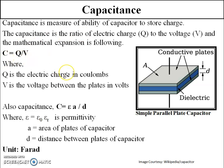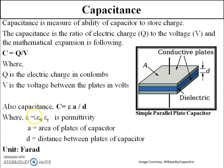Now suppose we have a capacitor with two conductive plates of area A and the plates are separated by distance d. This distance d covers the dielectric medium, shown in blue. Mathematically, the capacitance equation comes to be C = εA/d, where ε is permittivity, which is a combination of ε₀ and εᵣ. Permittivity is the ability of a medium to allow the flow of electric charge. εᵣ here is the relative permittivity.